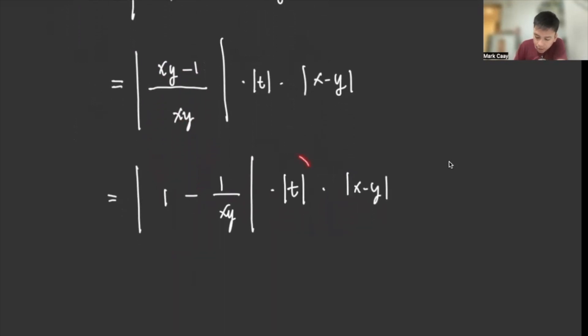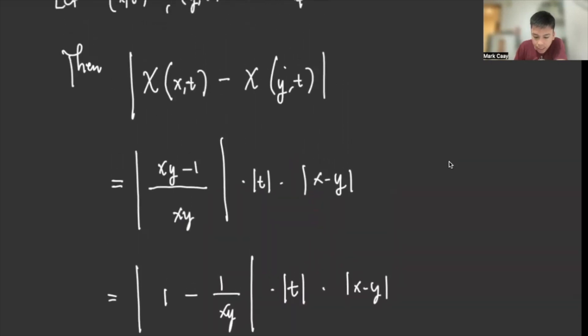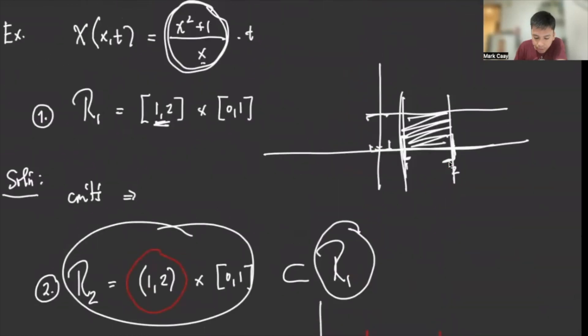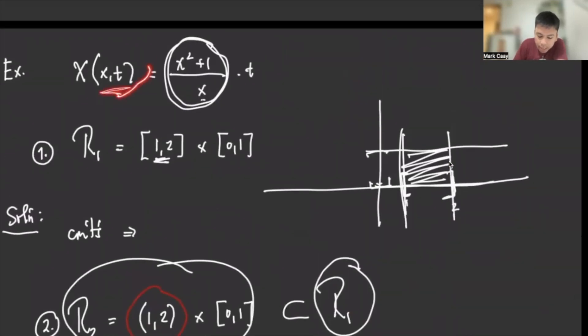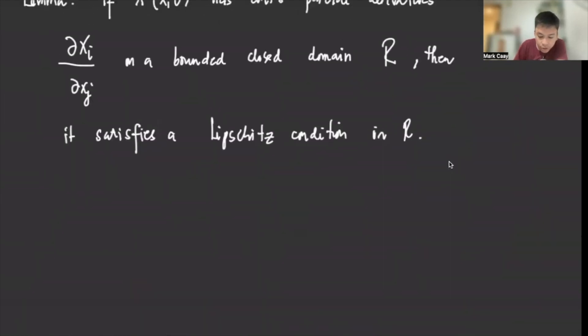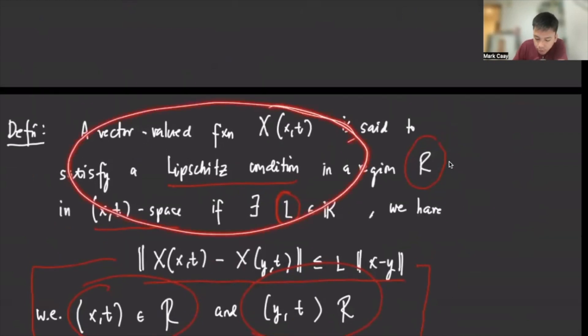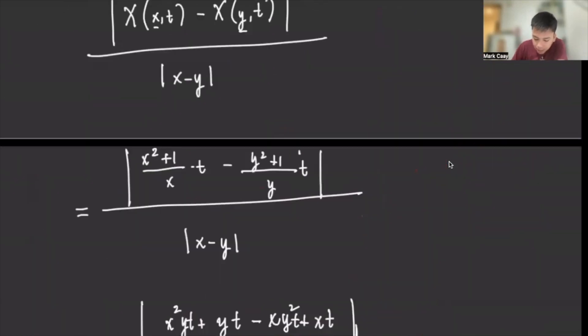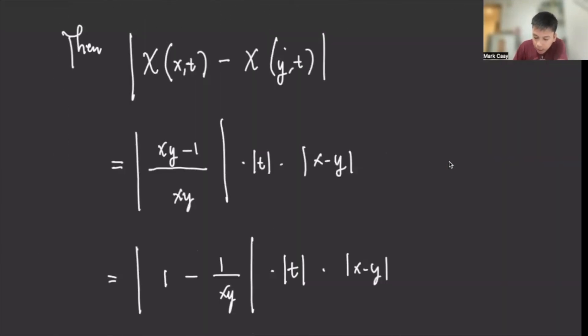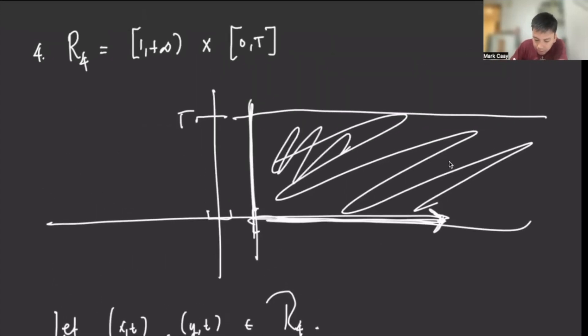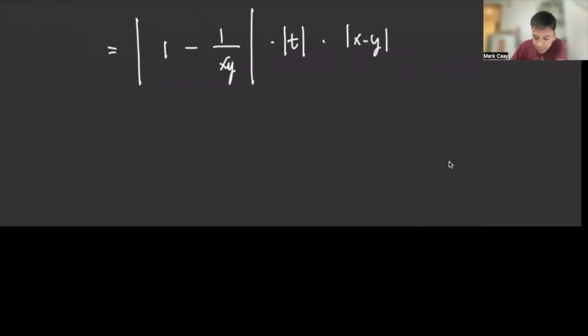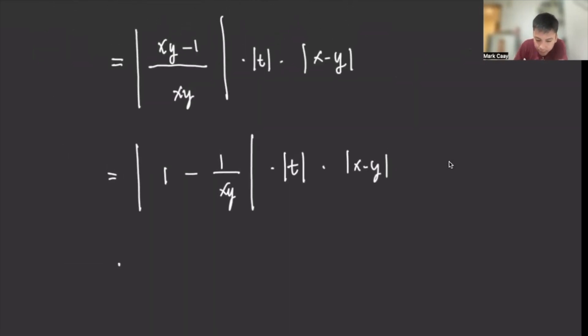Know for a fact that this one is because your function is defined on the xt space. And your xt space is in the region R. So your t is inside this. But remember, this is the bound of capital T. So ibig sabihin, capital T is bigger. So that means if I replace this with capital T, this is less than or equal to T times |x - y|.